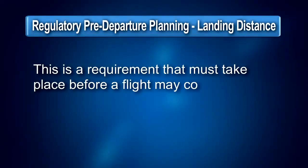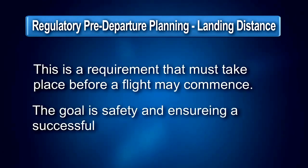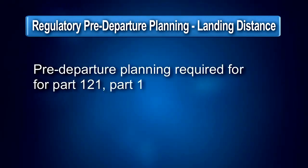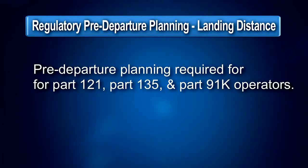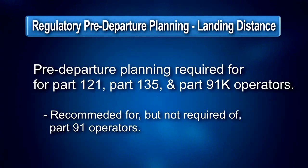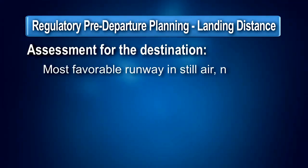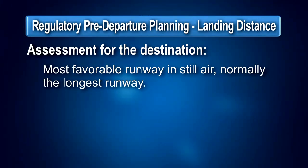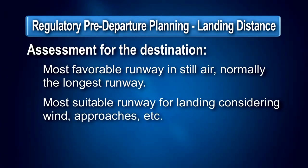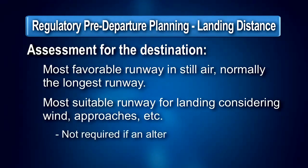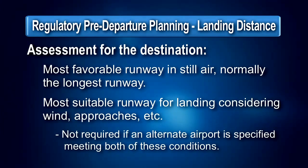The intent of this pre-departure planning is to ensure that a flight operation does not begin that cannot reasonably be concluded upon reaching the destination or alternate airport. Pre-departure planning is required by Part 121, Part 135, and Part 91K operators; Part 91 operators are encouraged to do so, but it is not required. At the destination airport, the factored landing distance must be evaluated using the most favorable runway — usually the longest runway in still air conditions — and for the most suitable runway for landing in consideration of wind conditions, instrument approaches available, or other factors. The evaluation of the most suitable runway is not required when an alternate airport with a runway meeting both requirements is designated.